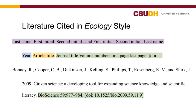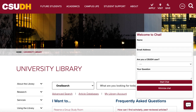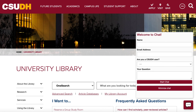Ecology style is similar to APA, but doesn't include italics and uses different punctuation. Formatting citations and your paper can require some attention to detail. If you're not sure how to cite a source using Ecology style, ask a librarian.